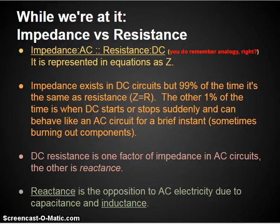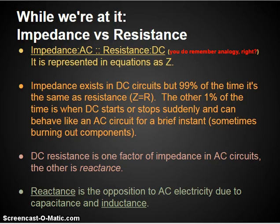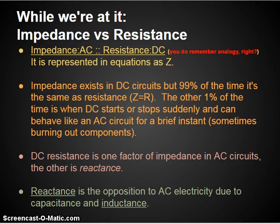That brings me to another difference between AC and DC, and that is the difference between impedance versus resistance. Impedance or resistance is represented in Ohm's Law as V equals I times R — resistance is represented by R. Impedance is represented by Z in a lot of these equations. It exists in DC circuits, but typically impedance is really only considered in AC circuits. DC resistance is just one element of overall impedance for AC circuits.